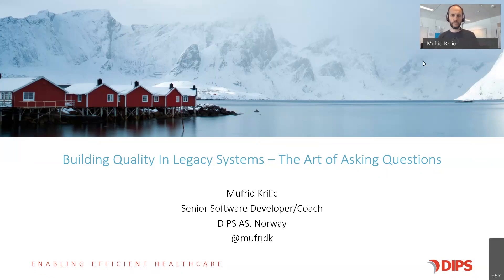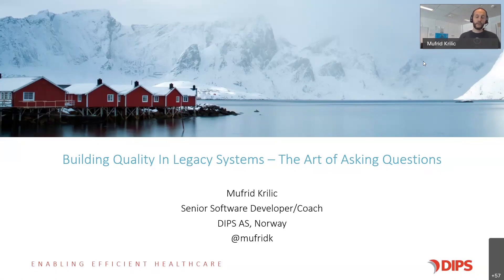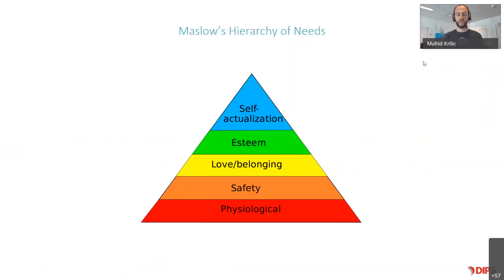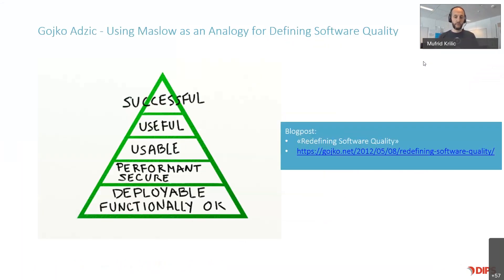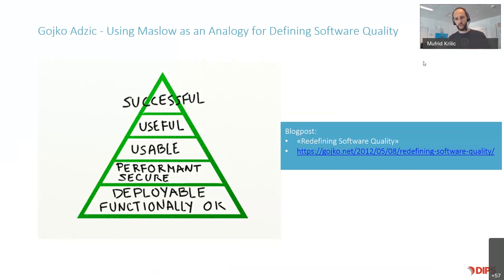So first of all, what is quality? I don't believe there is a definition that we all agree upon. So that prompted me to look for the definition from different perspectives. There are a bunch of models out there that deal with this problem. One of them is Maslow's Hierarchy of Needs, a well-known model. Some years ago, Goiko Ajic published a blog post called 'Redefining Software Quality,' where he used Maslow's model as an analogy for defining software quality. I'll walk you quickly through the main takeaways from Goiko's post, and then show you how we went about applying that approach in our system.